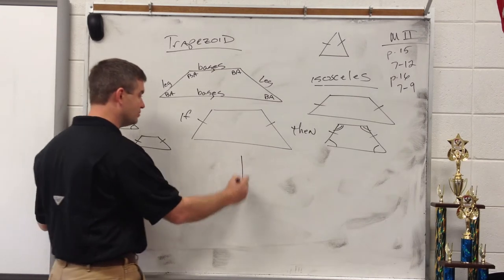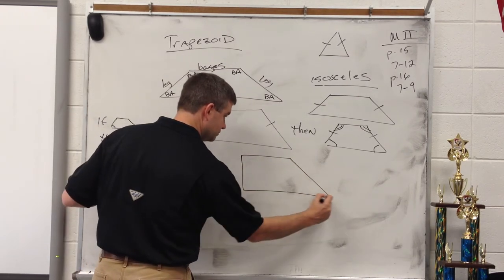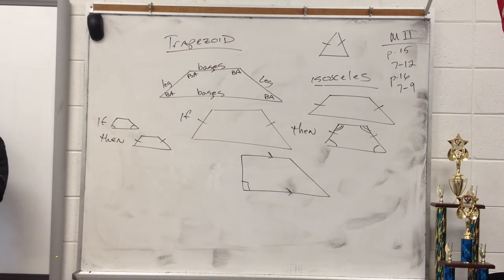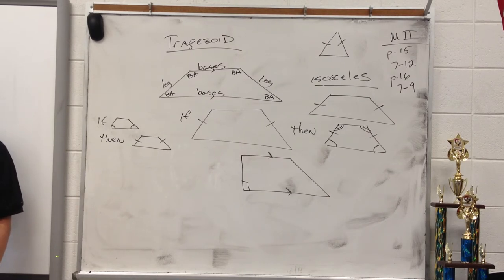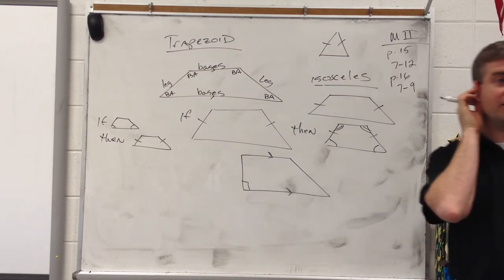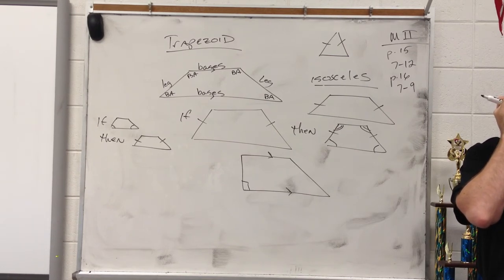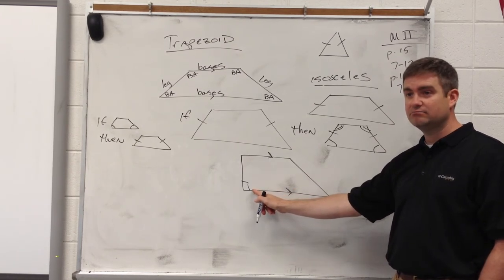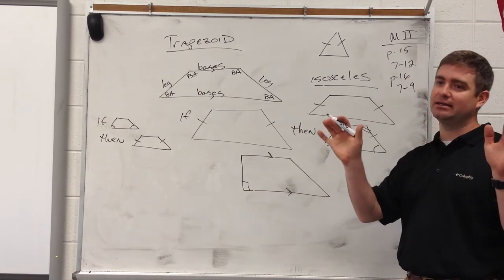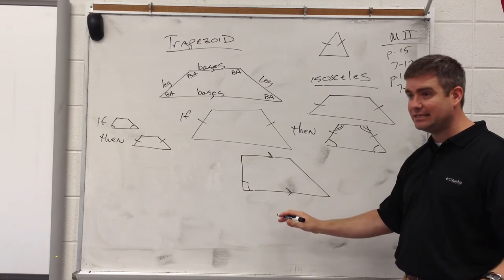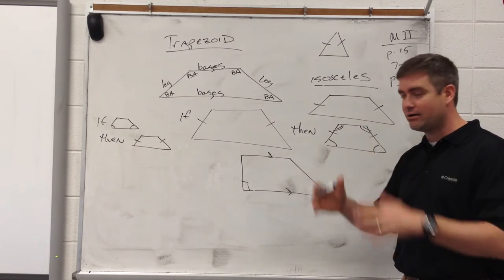Is this a trapezoid? Yes. Know your definition — a trapezoid is a quadrilateral with exactly one pair of parallel sides. Does it have one pair? Yes. Does it make any difference that one angle is 90 degrees? No. Some people see that 90 and say it must be something different, but if this side is parallel with this side and that's it — one pair — then it is a trapezoid.